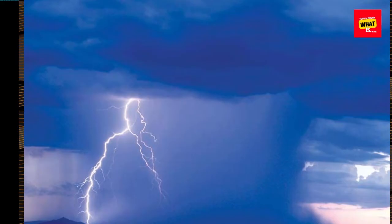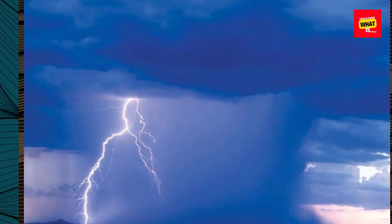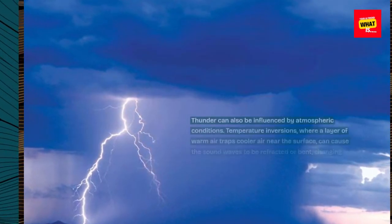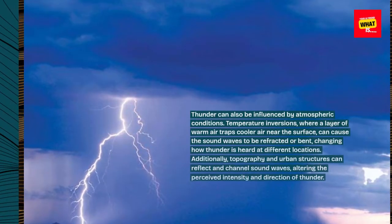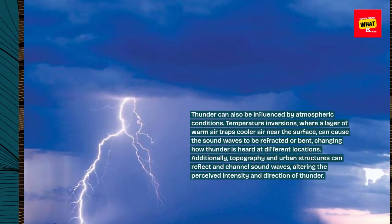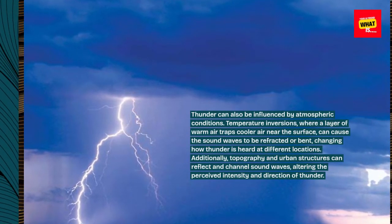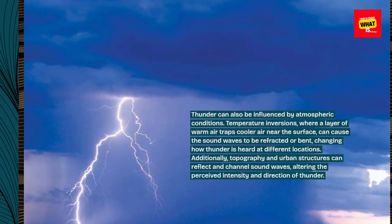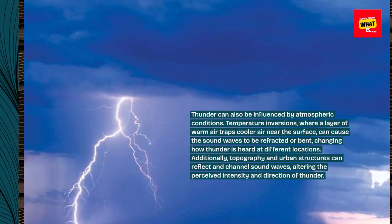Thunder can also be influenced by atmospheric conditions. Temperature inversions, where a layer of warm air traps cooler air near the surface, can cause the sound waves to be refracted or bent, changing how thunder is heard at different locations.